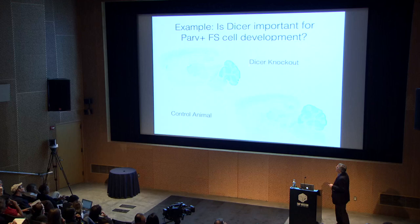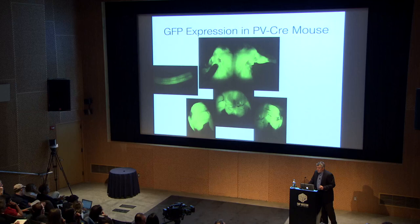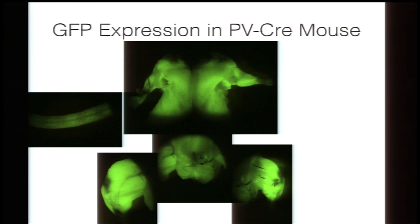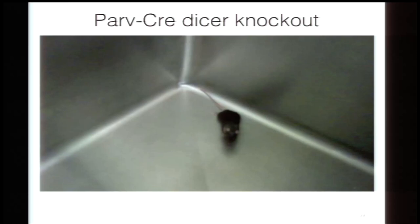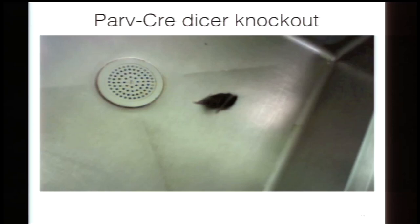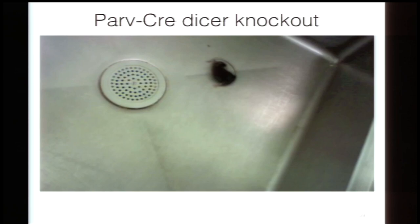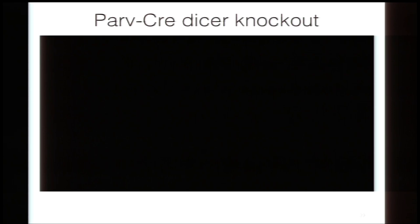We obtained a conditional allele of DICER and crossed it to parvalbumin-Cre. However, parvalbumin is expressed in many places — spinal cord, cerebellum, and muscle. When we analyzed these animals, a normal mouse walks around normally, but the DICER knockout in parvalbumin-positive neurons shows a dramatic phenotype, probably due to losing DICER in interneurons in the spinal cord and dorsal root ganglion. Interestingly, when we recorded from the fast-spiking basket cells, they appeared completely normal with no seizure-like phenotype. This illustrates the need for more specific genetic drivers that allow more pointed manipulations.